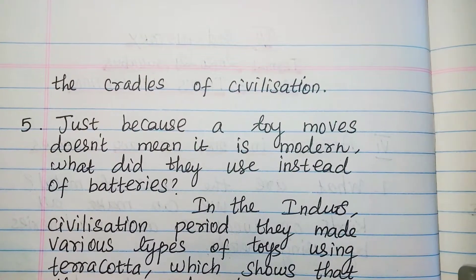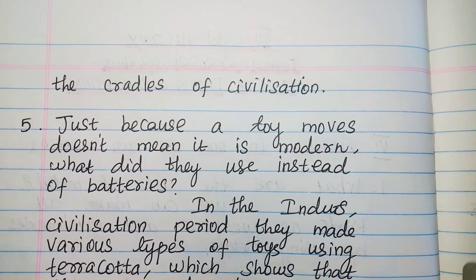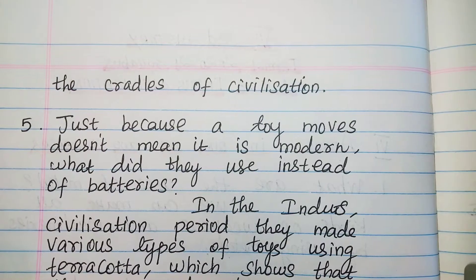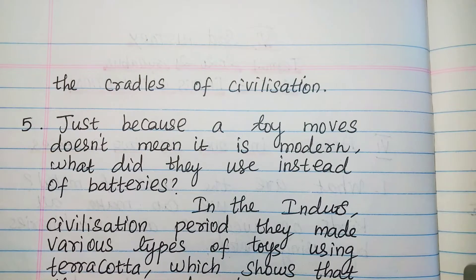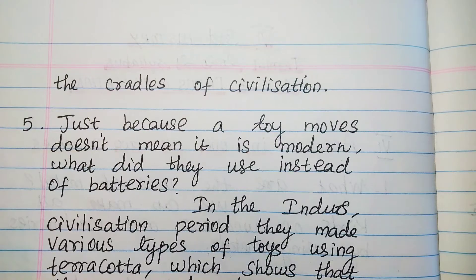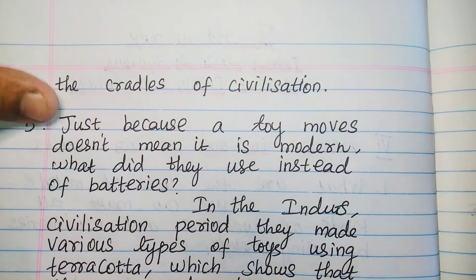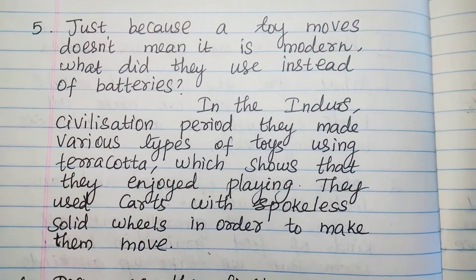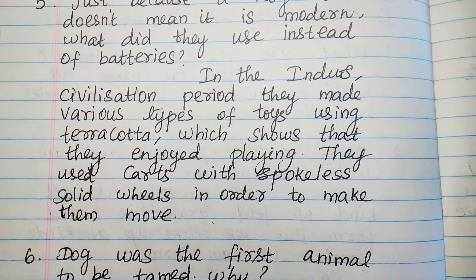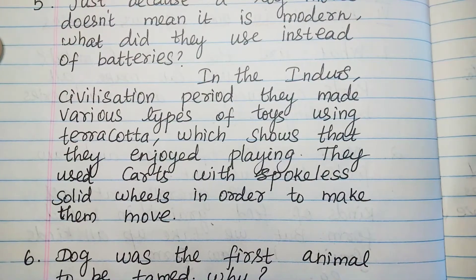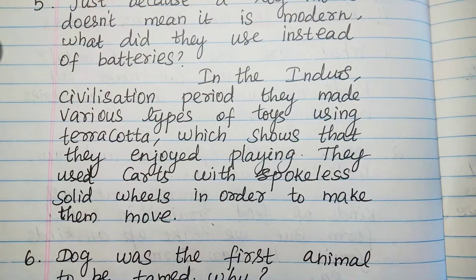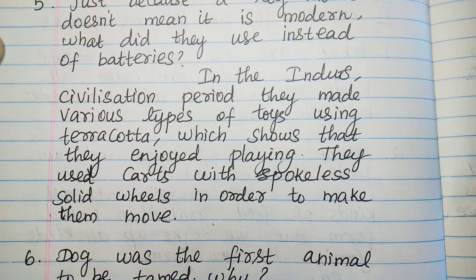Question 5: Just because a toy moves doesn't mean it is modern — what did they use instead of batteries? In the Indus civilization period, they made various types of toys using terracotta, which shows that they enjoyed playing. They used carts with spokeless solid wheels in order to make them move.